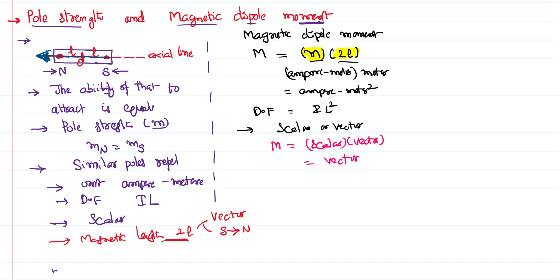What is the direction of the magnetic moment? It will automatically carry the direction of the vector quantity involved. That vector is the magnetic length. The direction of the magnetic length vector is from the south pole to the north pole.